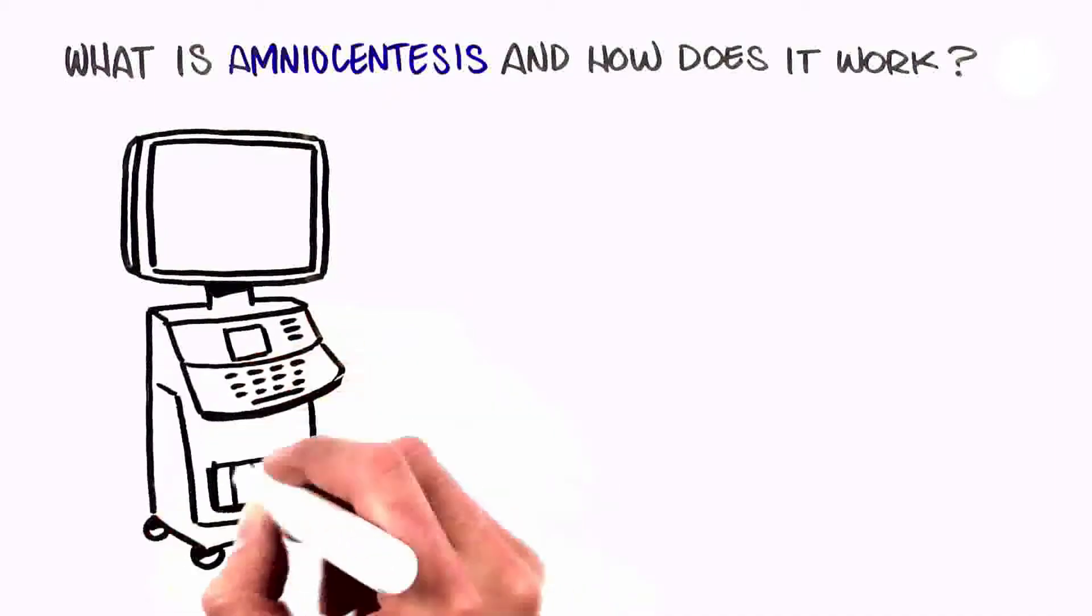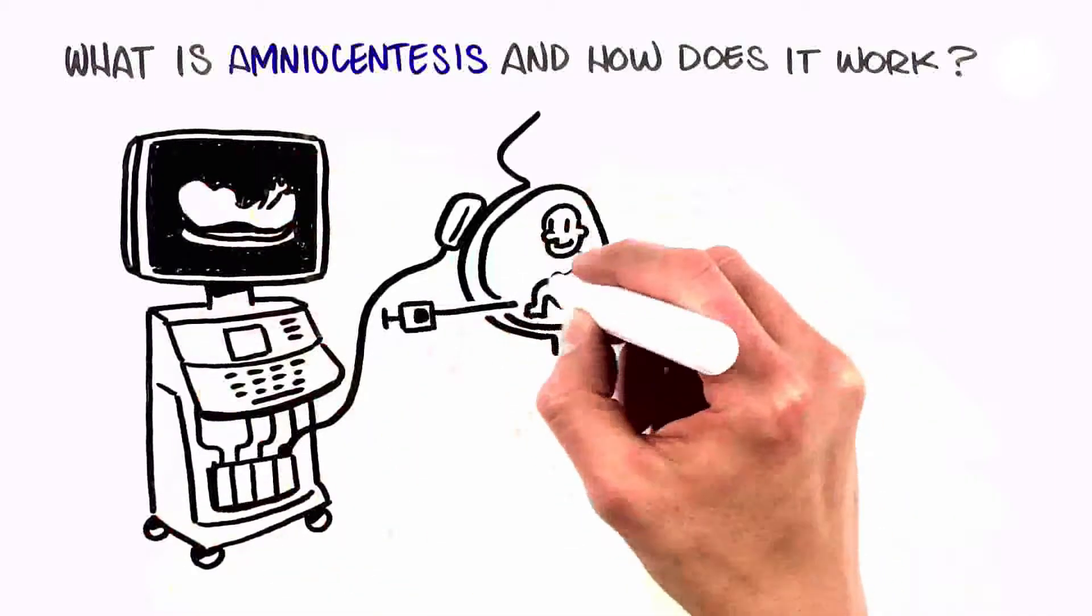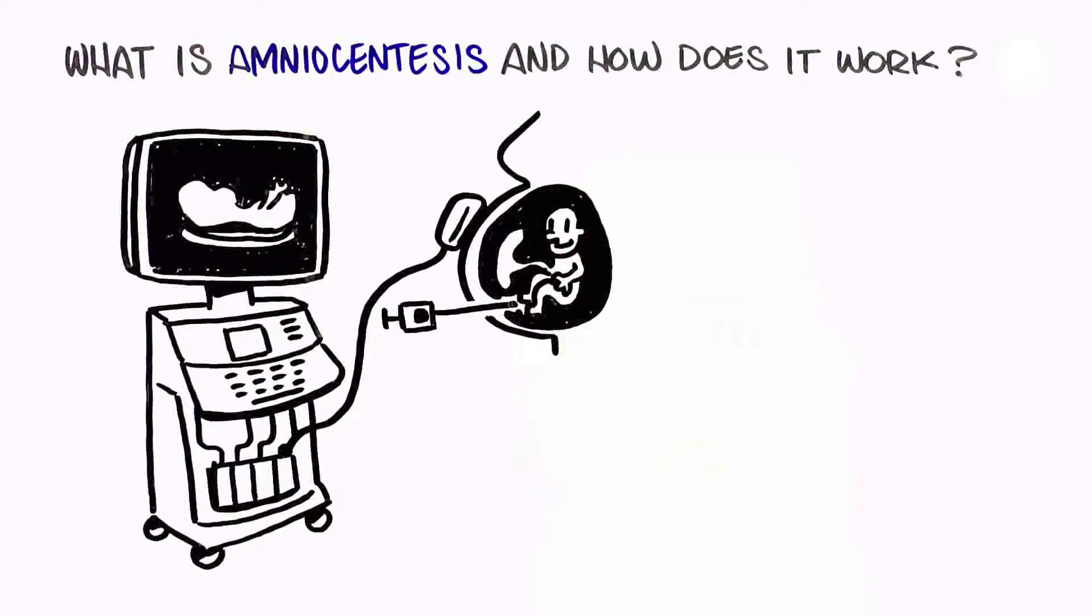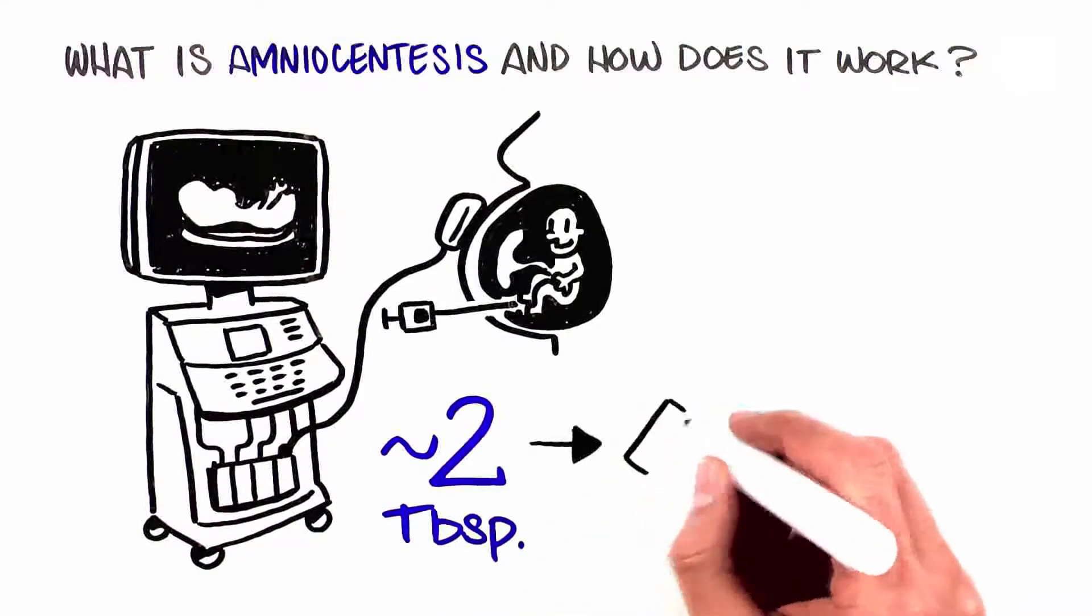Using ultrasound as a guide, a very thin needle is inserted through the mother's abdomen into the amniotic sac, a fluid-filled area surrounding the baby. A small amount of fluid is withdrawn and sent to the laboratory for testing.